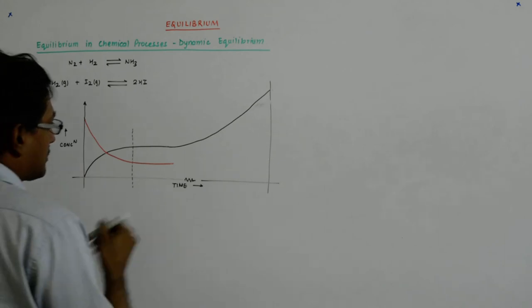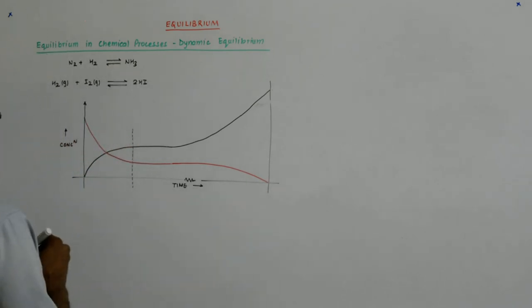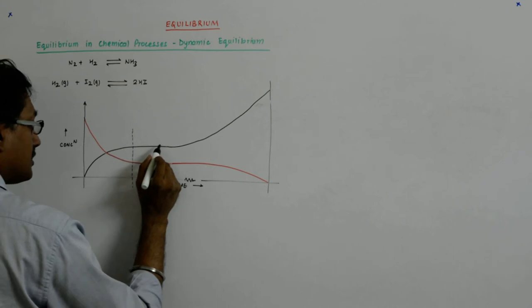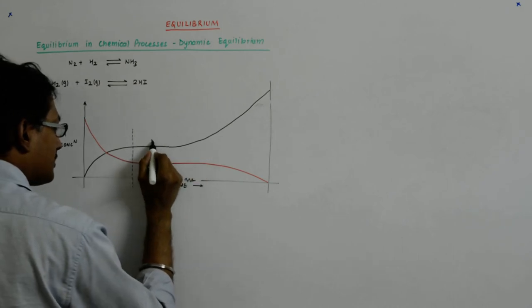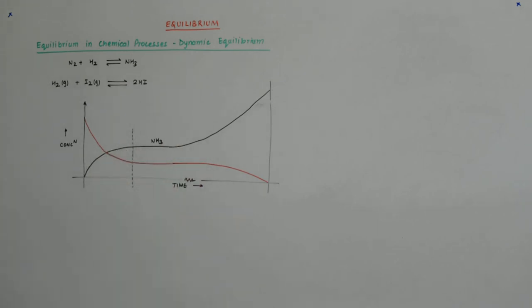And this would have been nowhere. What is this? This is N2 or H2, right? This is NH3. This is NH3. Then again, you would have found the same equilibrium.